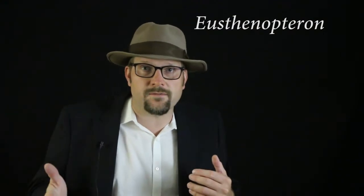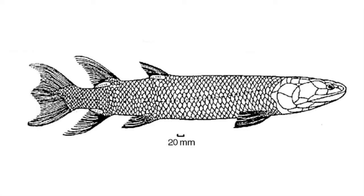Our first fossil is Eusthenopteron, a sarcopterygian fish that lived in Canada during the late Devonian period. This fish exhibits a diphycercal tail, the gill region is attached to the skull, and a number of fins are present, including the pectoral and pelvic fins, as well as a ventral and two dorsal fins. The teeth of Eusthenopteron are complex and feature a folding of dentine called labyrinthine teeth, which is found in some early tetrapods, but for the most part Eusthenopteron is a normal-looking, fully aquatic fish.